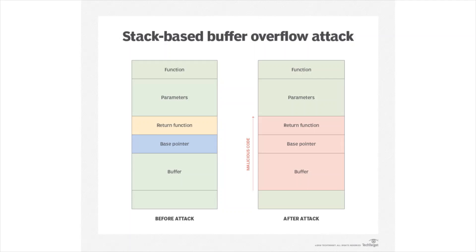When the function returns, it returns to our NOP sled, slides down the NOP sled, and then executes the malicious code — which in our case is going to be code that spawns a shell. That's how we'll do this exploit, as we'll see in the next section.